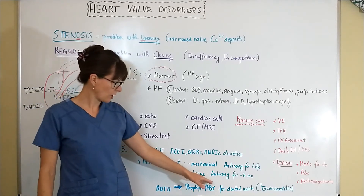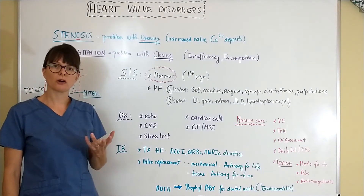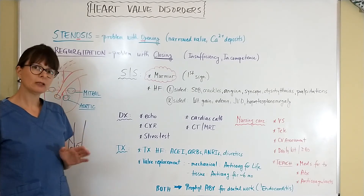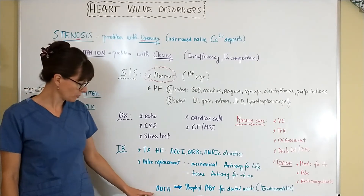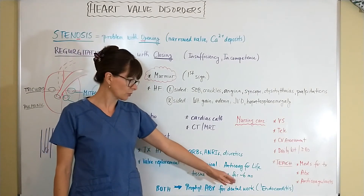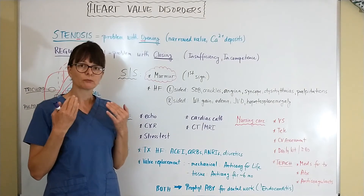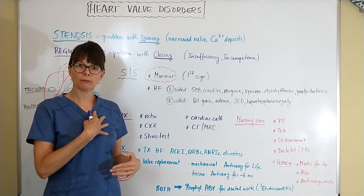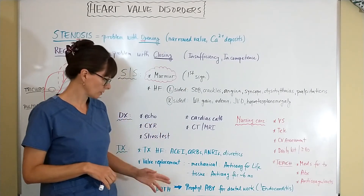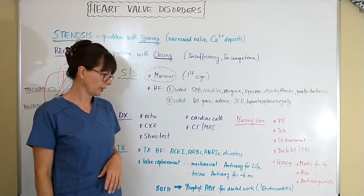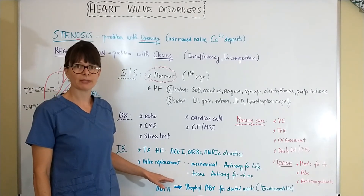With tissue valves, anticoagulation is typically only needed for about six months post-op, after which the patient can come off anticoagulation with close follow-up. Importantly, both mechanical and tissue valve replacement patients must take prophylactic antibiotics before dental work, because bacteria can enter the bloodstream during dental procedures and latch onto the artificial valve, leading to serious complications or valve malfunction. This is a point that frequently comes up on nursing exams.